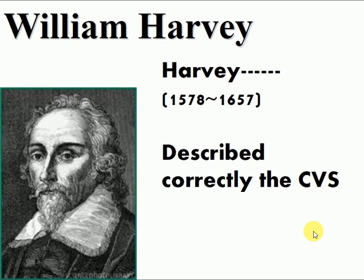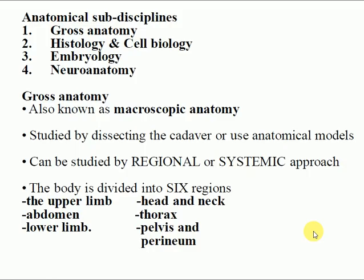It is very important to note these things — every part of our study has questions in your exam, so don't regard them as unimportant. They are very important in your MCQ questions. Anatomy has sub-disciplines: gross anatomy, histology, cell biology, embryology, and neurology. In neurology, we study neurons. This module — module one of anatomy — covers gross anatomy.